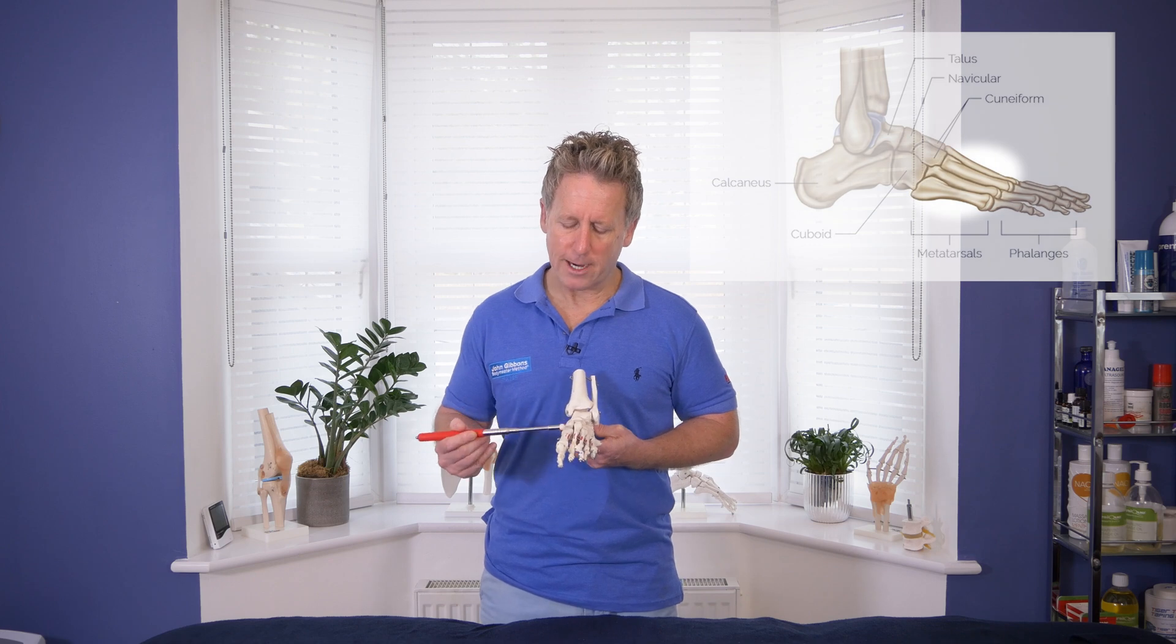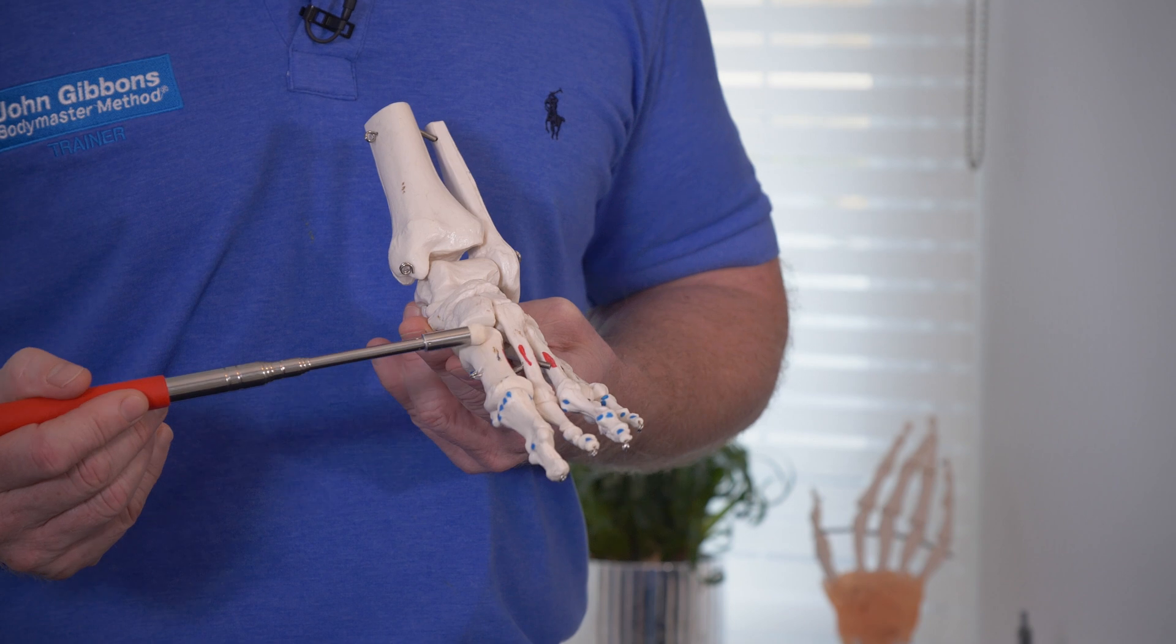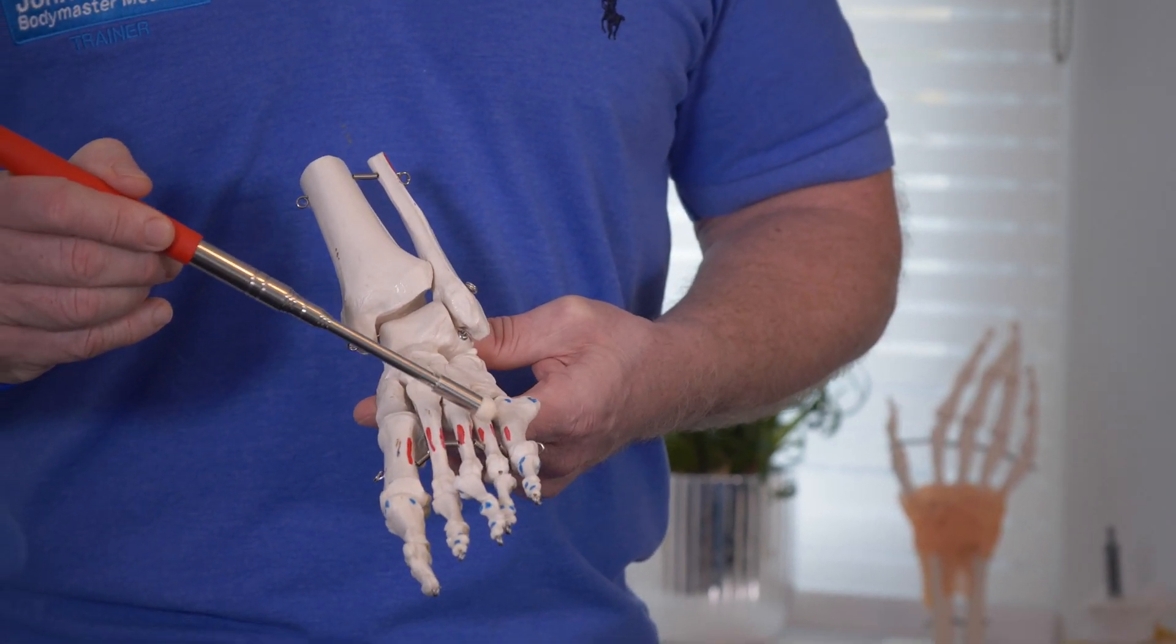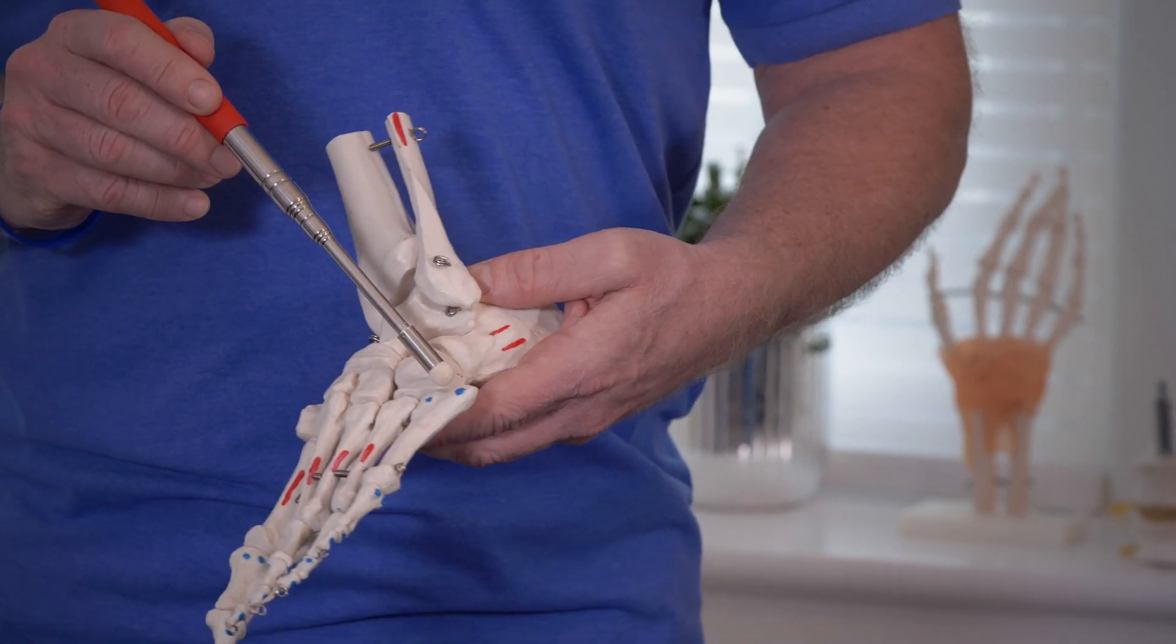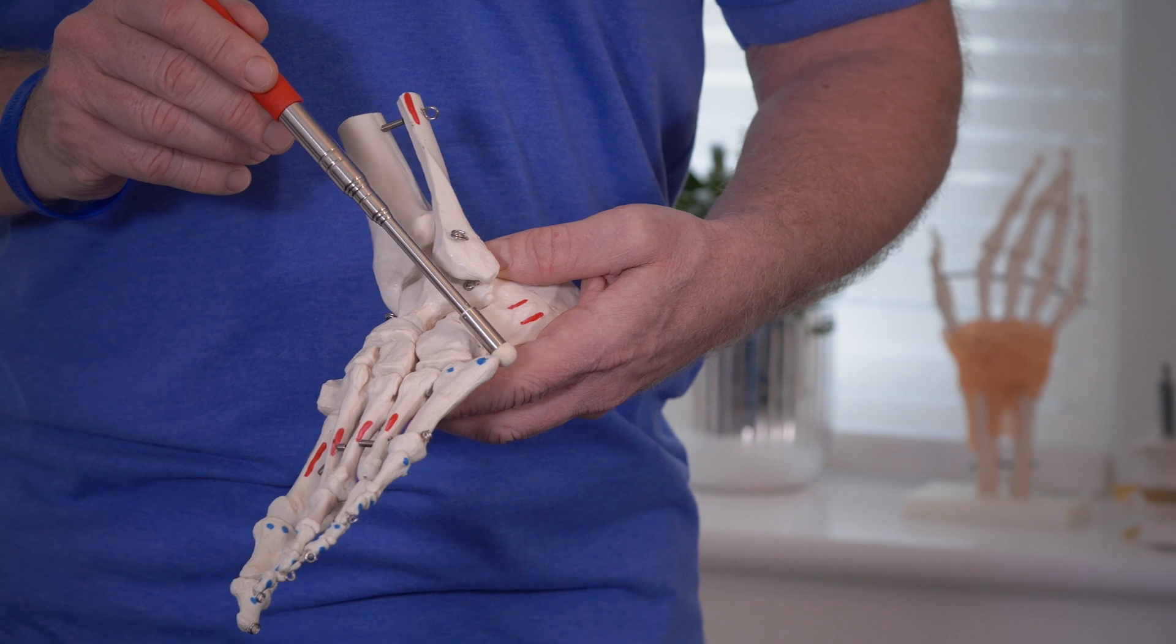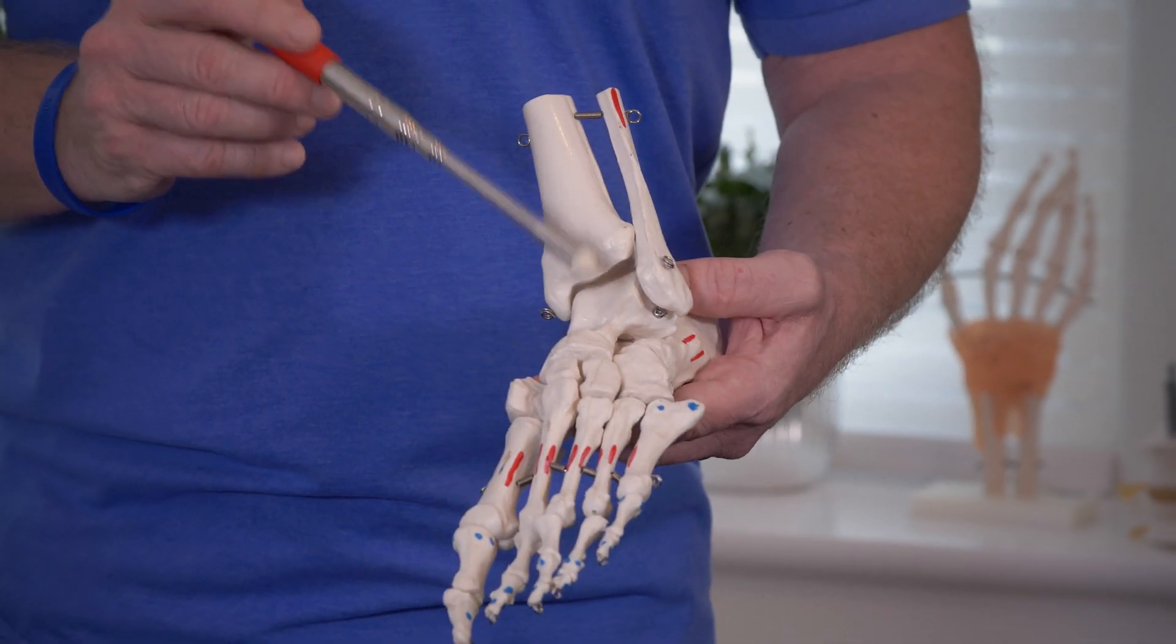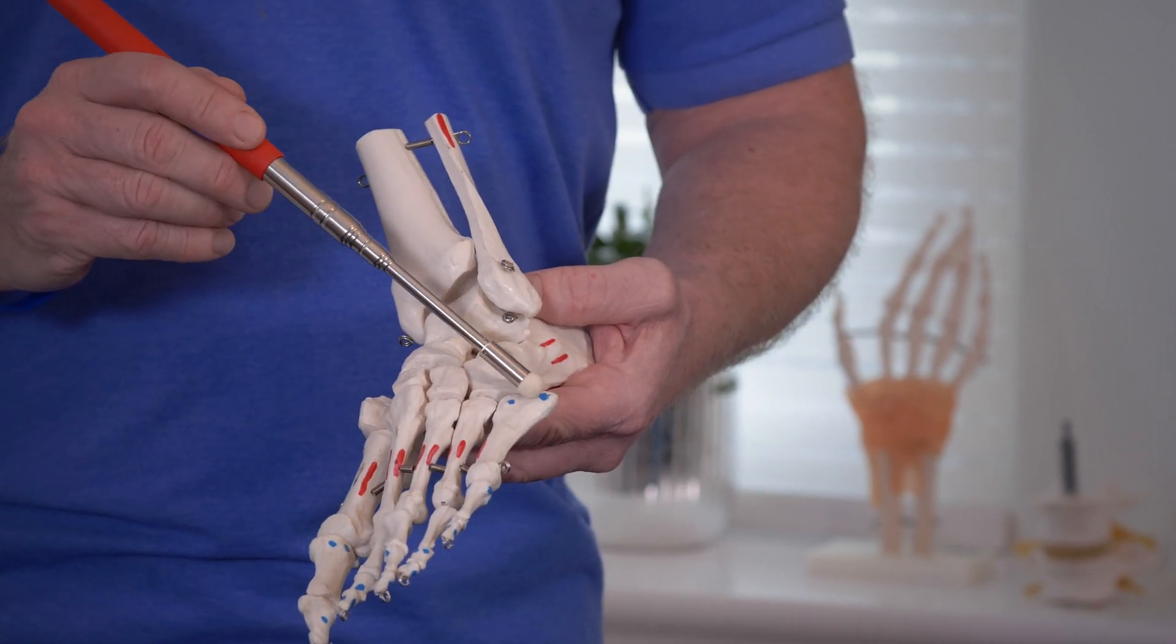We have five metatarsals, and the great toe side, which is known as the hallux, is the first. This will be the second, third, fourth, and the fifth metatarsal. This is known as the base of the fifth metatarsal here, and it's easily palpable. That will be where the peroneal brevis or fibularis brevis will come down and attach.